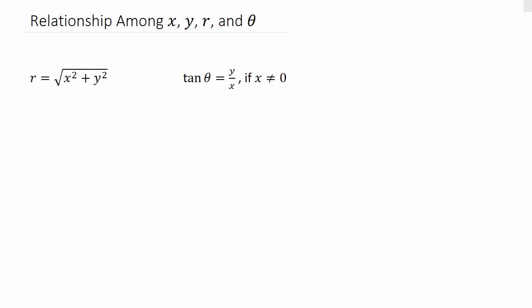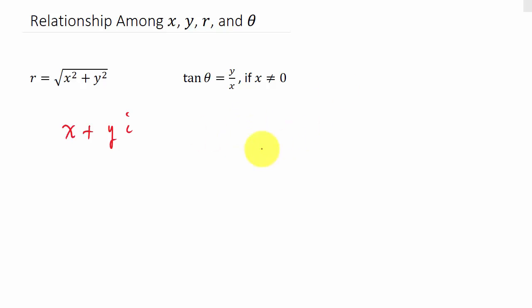We're going to look at complex numbers and converting from rectangular to trigonometric form. I've got another video going from trigonometric to rectangular form. The complex number in rectangular form is x plus yi (some books write a plus bi). The trigonometric form is r times cosine theta plus i times sine theta.